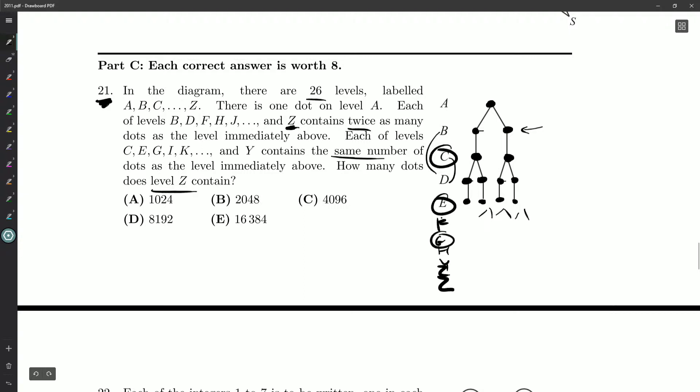How many dots does level Z contain? Now, you might try to draw this out, but I strongly don't recommend it. Just take a look at the answers. The smallest one is 1024. If you want to waste the rest of the contest paper doing it just to get the right answer for 21, good I guess, but we can be smarter about this.